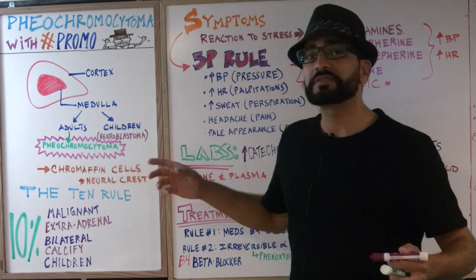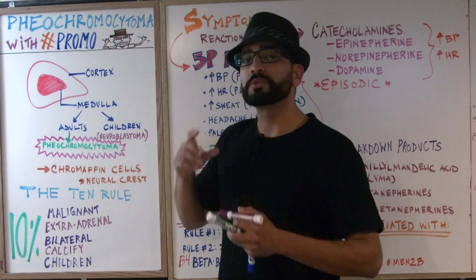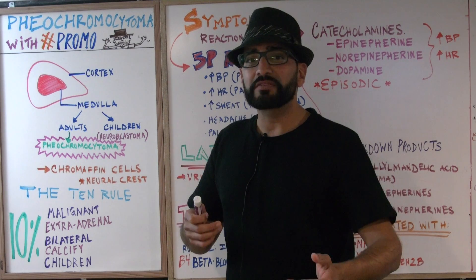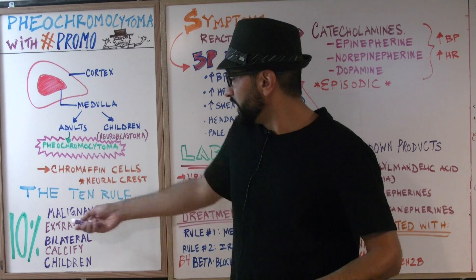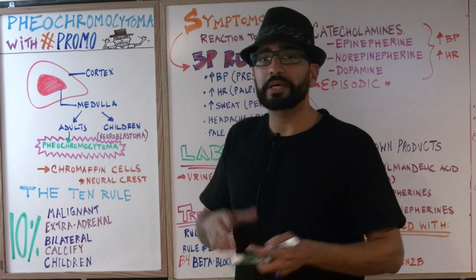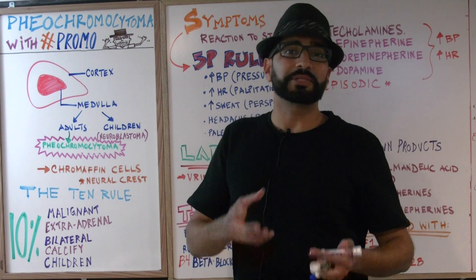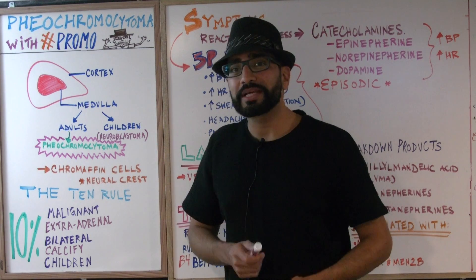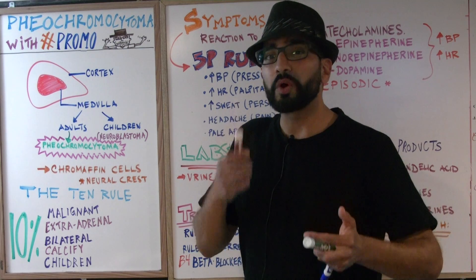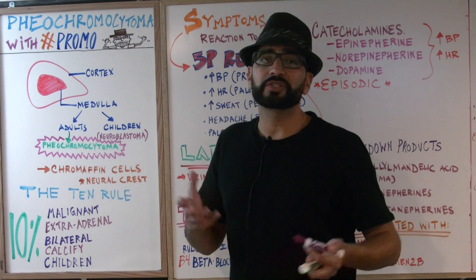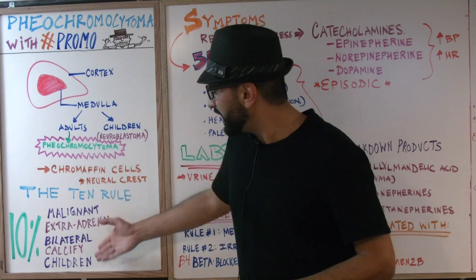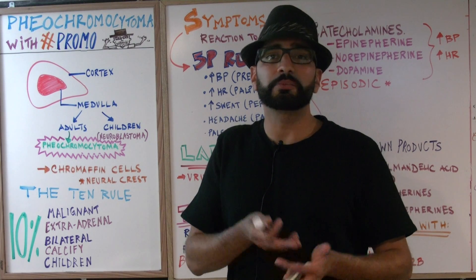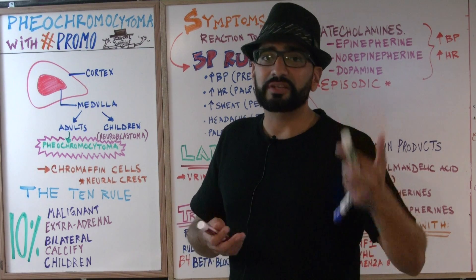There's the rule of 10s. What does that mean? 10% of these tumors are going to be malignant — so 90% are going to be non-malignant. 10% are going to be extraadrenal, meaning most of them are located within the adrenal gland, but 10% will be located outside. 10% are bilateral, meaning most of them are unilateral, involving only one adrenal gland. 10% of them are going to calcify, so most will not calcify. And 10% will target children — it's not common, but it can happen.